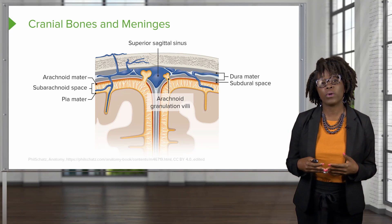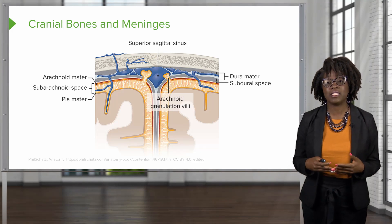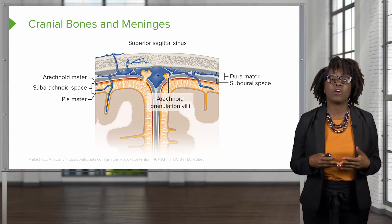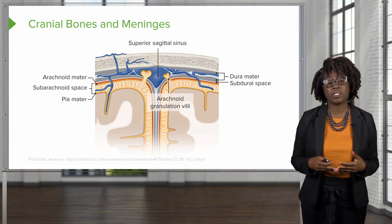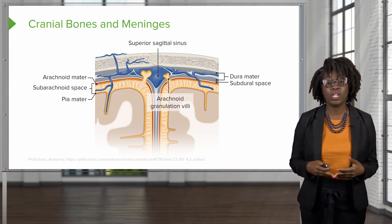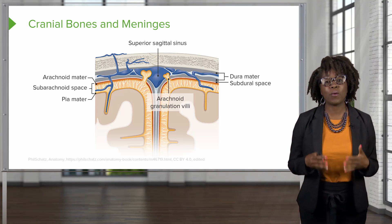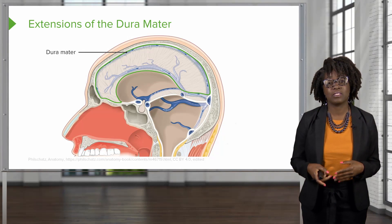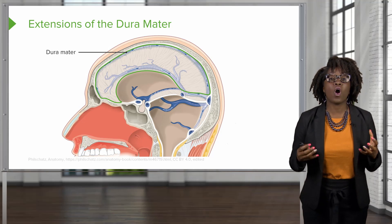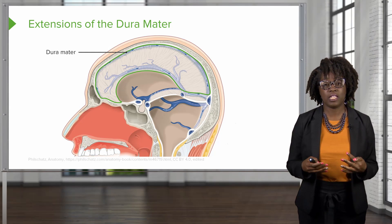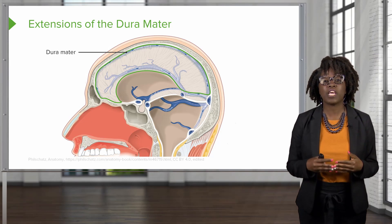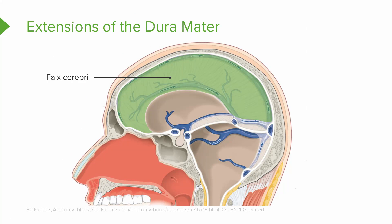Another structure that is important and a part of the cranial meninges is known as the arachnoid granulation villi. These structures are important for reabsorption of cerebrospinal fluid. The dura mater also has different extensions. The dura mater extends down in order to separate the two hemispheres, and this extension is known as the falx cerebri.